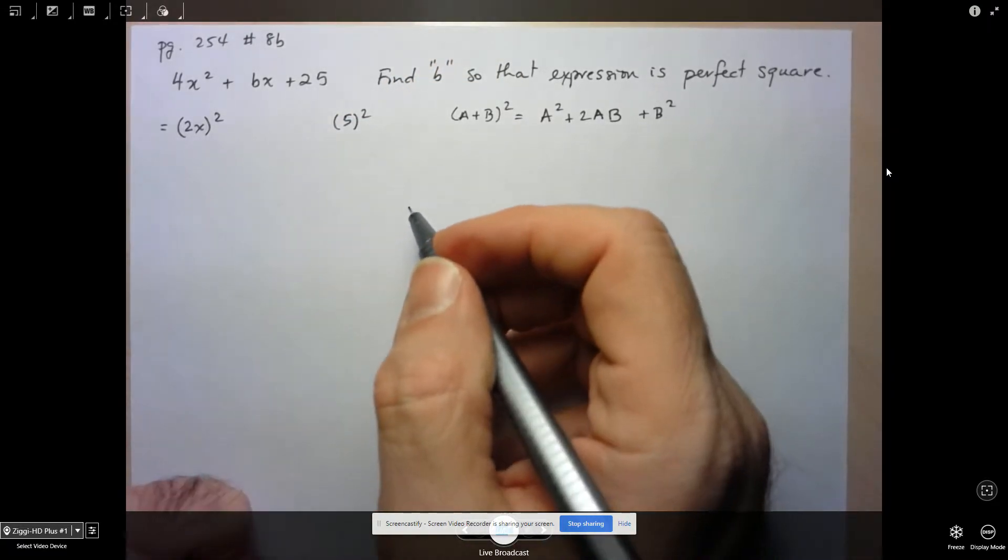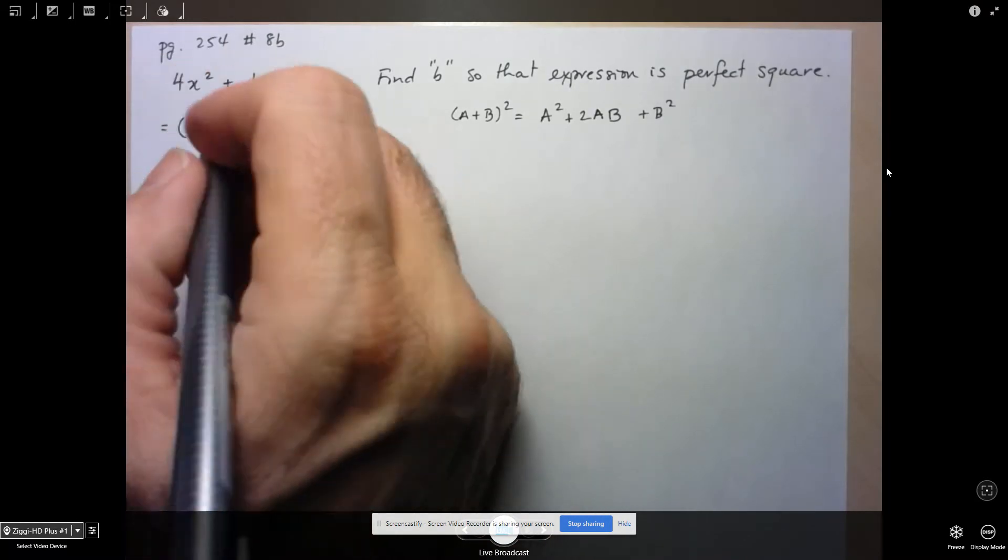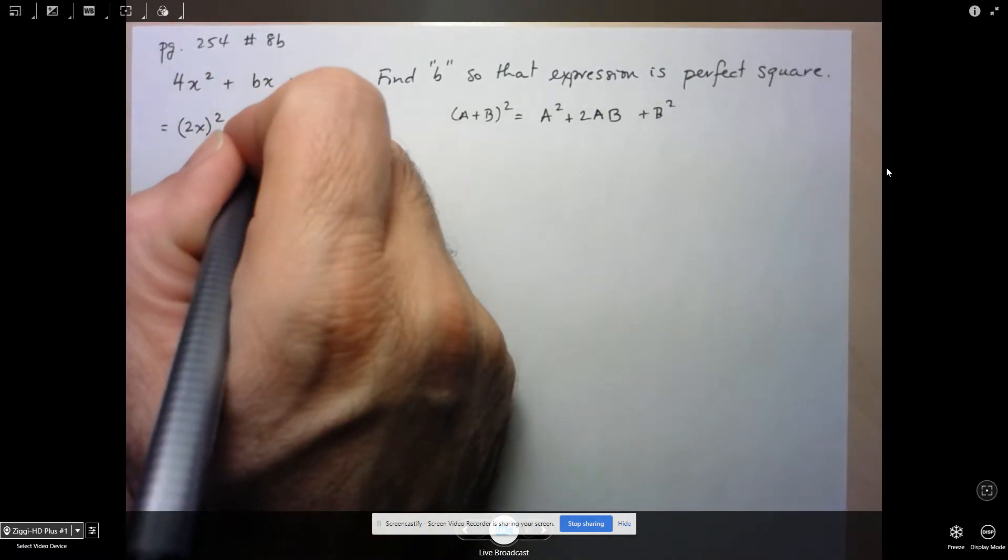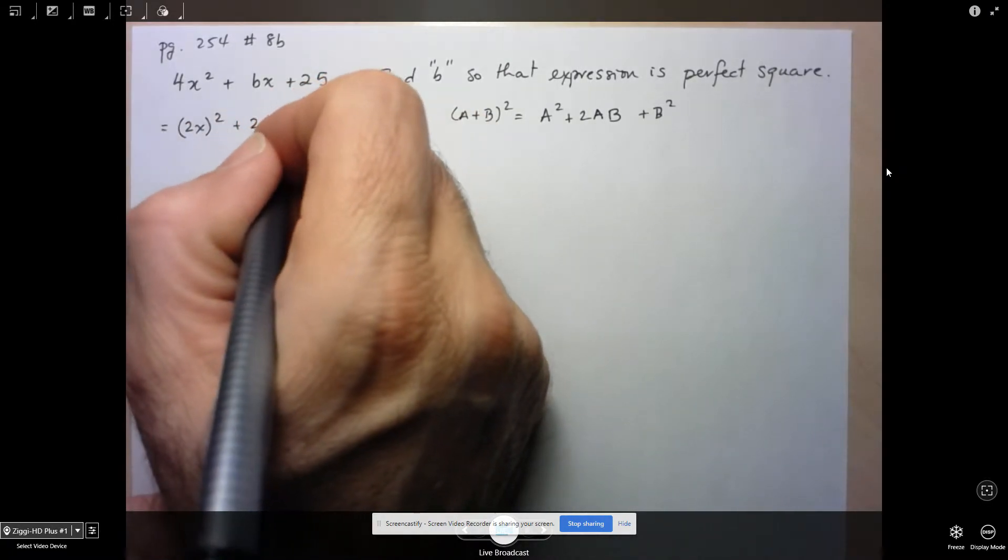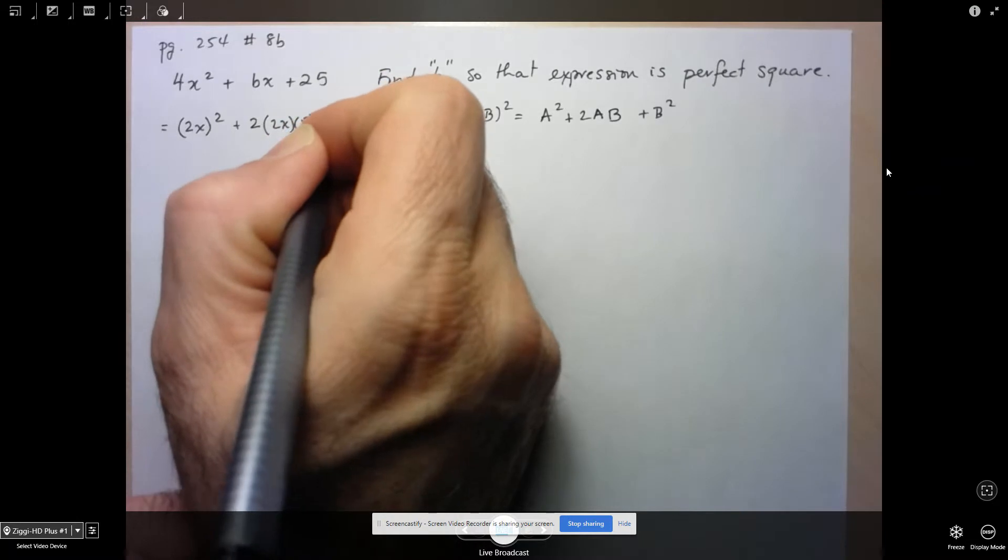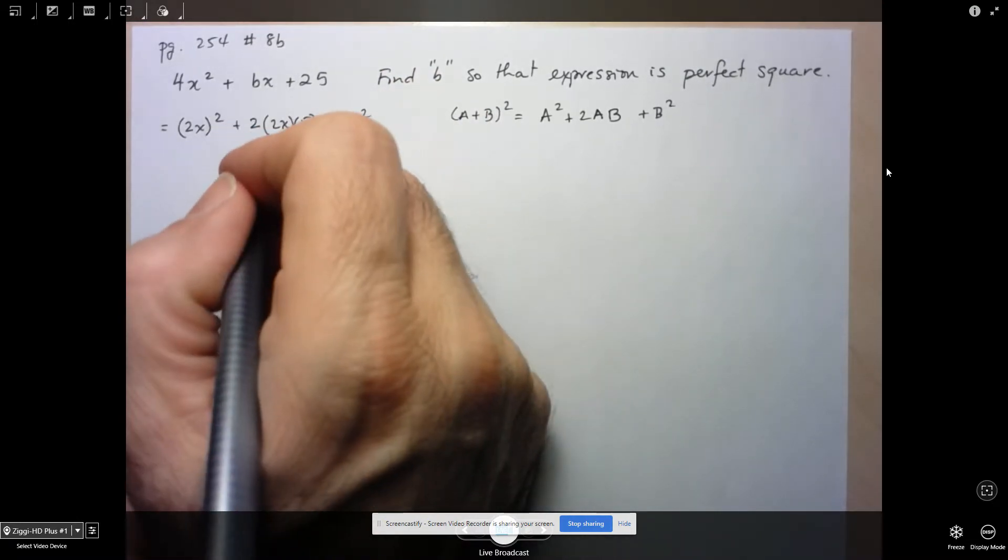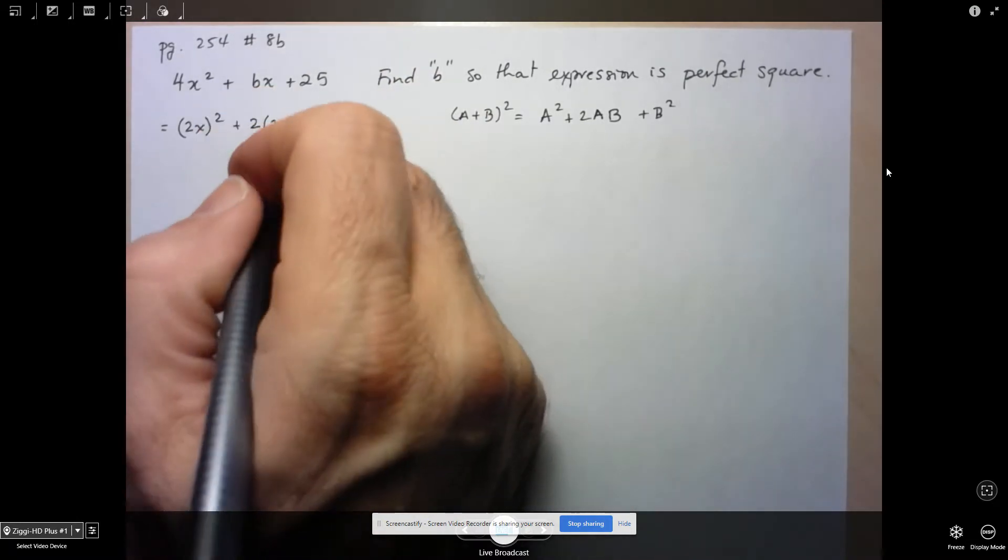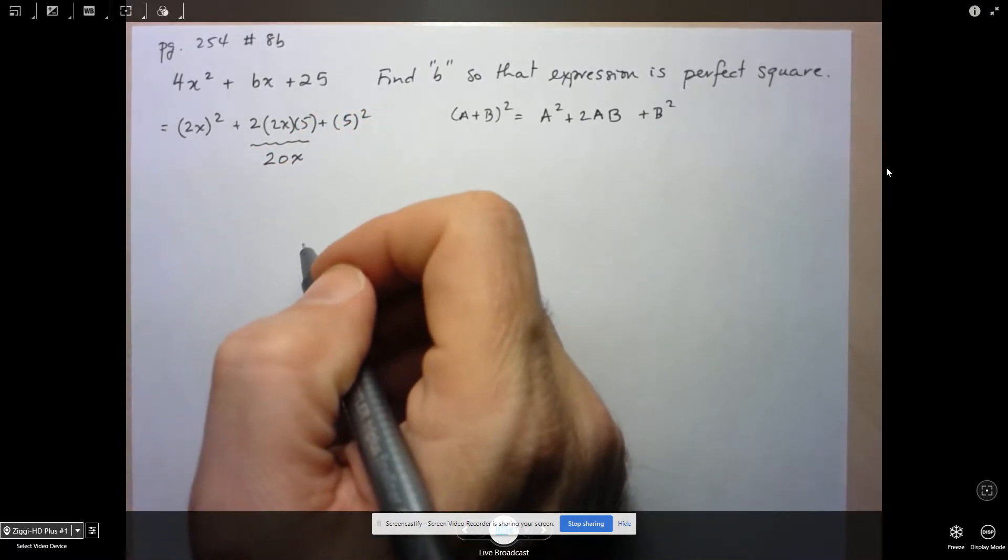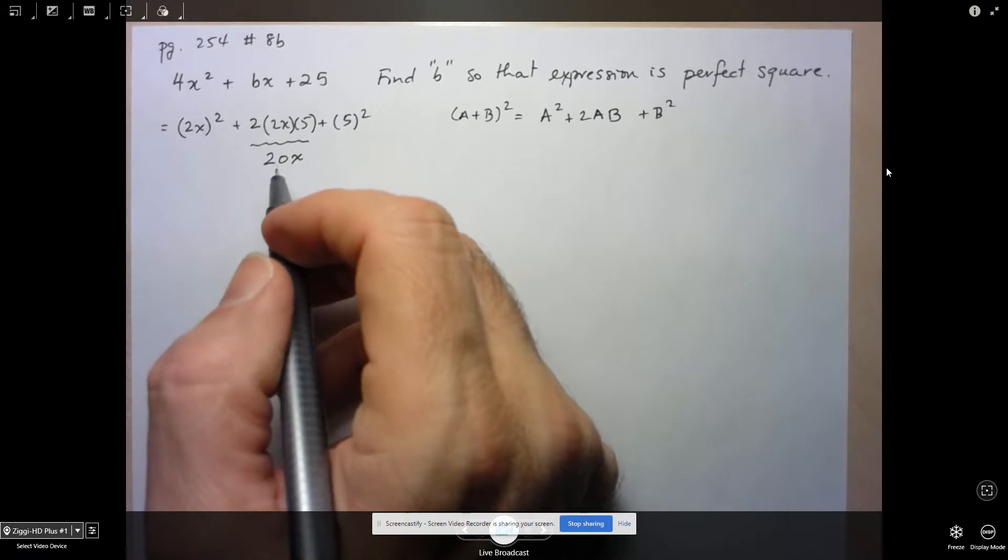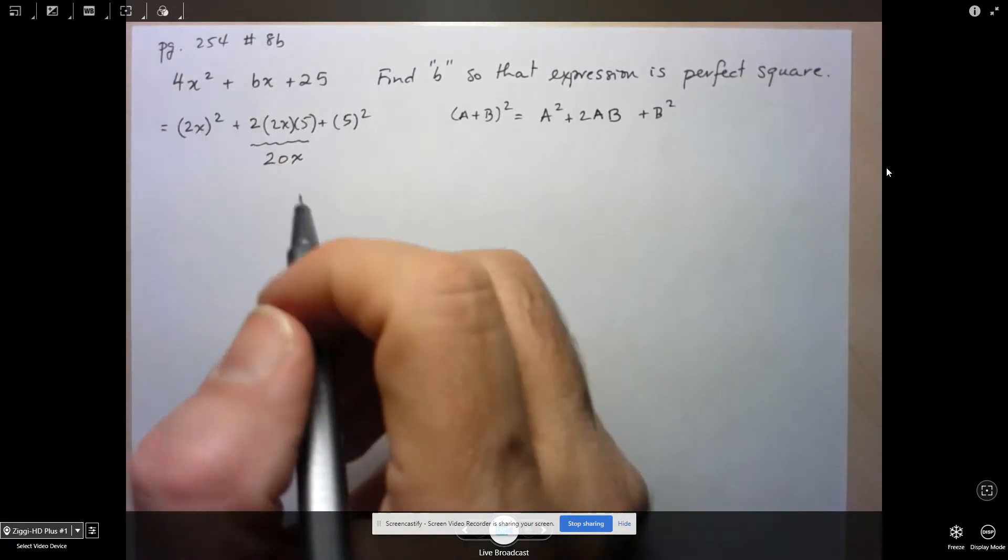So here, in order for this to be a perfect square, I need the middle term to be twice the product of first and last. So 2x times 5. In other words, what does this simplify to? The middle term has to be equal to 20x. So b equals 20 is an answer that would make this whole thing a perfect square.